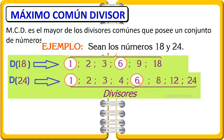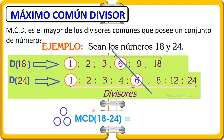¿Cuál es el máximo común divisor de 18 y 24? Por teoría, es el mayor divisor común, ¿y cuál es el mayor divisor común? El 6. Por lo tanto, el máximo común divisor de 18 y 24 es el número 6.